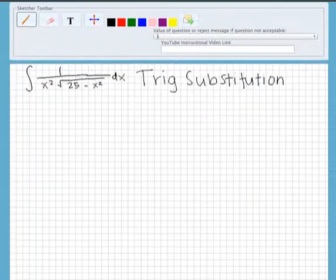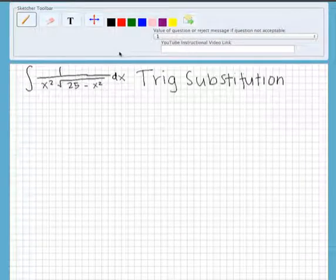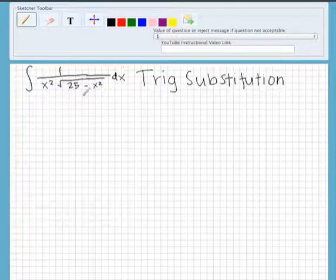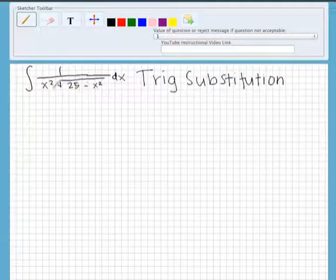So I've started by writing out the problem, which is the integral of 1 over x squared times the square root of 25 minus x squared dx.